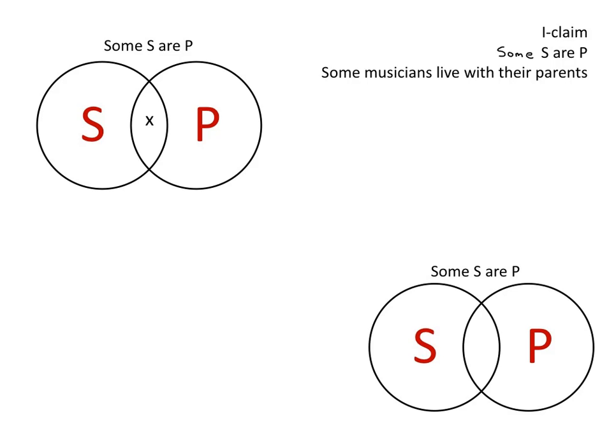In this video I'm going to show you how to diagram the I claim. The I claim is a categorical claim of the form some S are P.